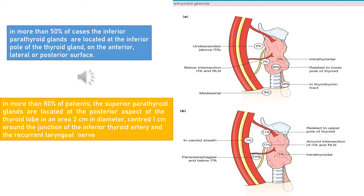In more than 80% of patients, the superior parathyroid glands are located at the posterior aspect of the thyroid lobe, in an area 2 cm in diameter, centered 1 cm around the junction of the inferior thyroid artery and the recurrent laryngeal nerve.